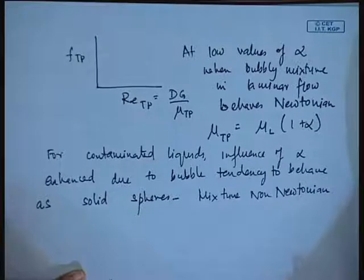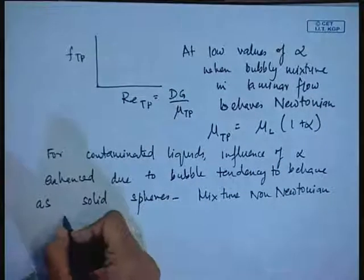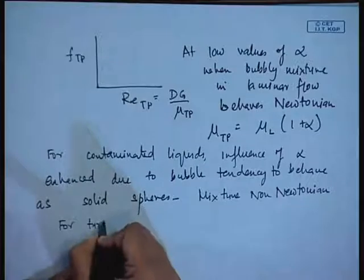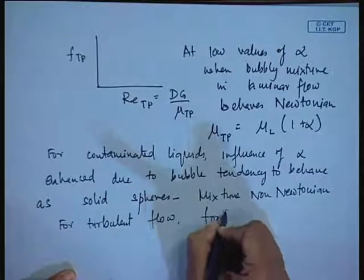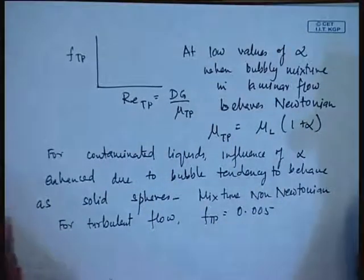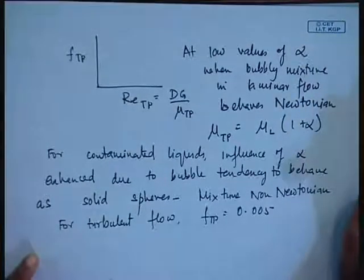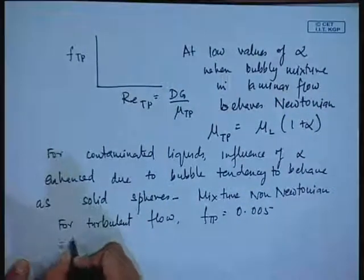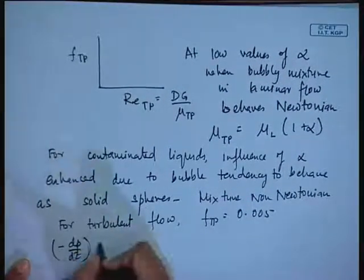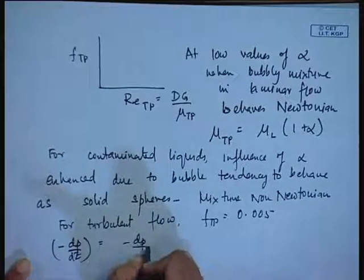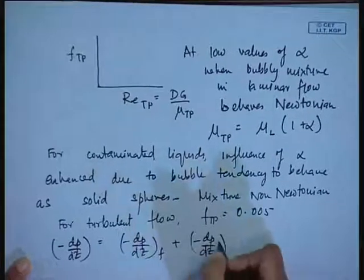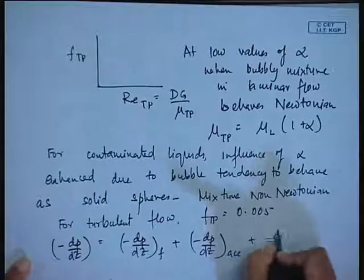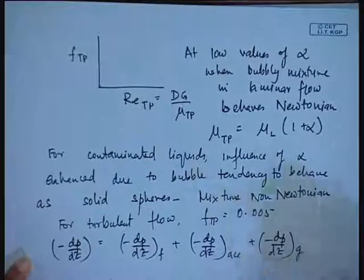Under such circumstances we cannot use μ_tp. For turbulent flow, when the liquid is contaminated and bubble concentration is very high, f_tp can be taken as a constant value of 0.005 — this is a good approximation. The pressure gradient is a summation of three components which we have discussed several times: the frictional component, the acceleration component, and the gravitational component. For horizontal flow, the gravitational component becomes equal to zero.